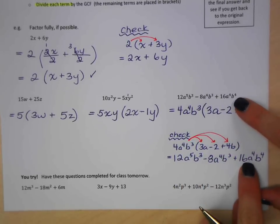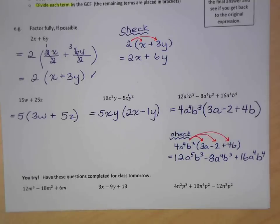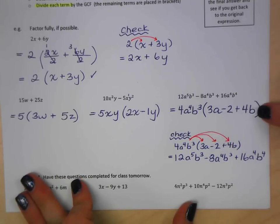So there's my check. Let's just double-check that I get back to my question. Minus 8, A to the 4, B to the 3. 16, A to the 4, B to the 4. So I know that I have common factored this properly.